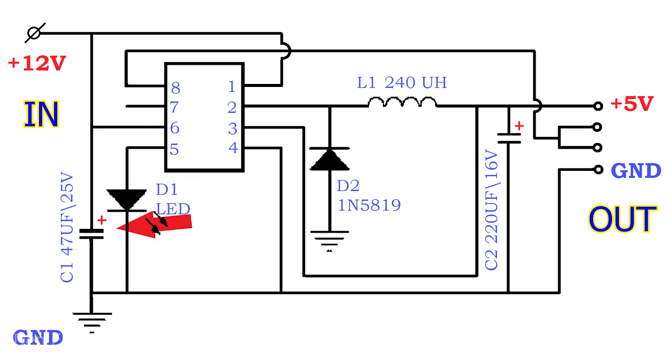Capacitor C1 at 47 microfarads. The voltage is indicated as 25 volts, but this is provided that you feed the converter from 12. If you supply 30 volts, then the capacitor must be taken with a margin, by 35, 50 volts.